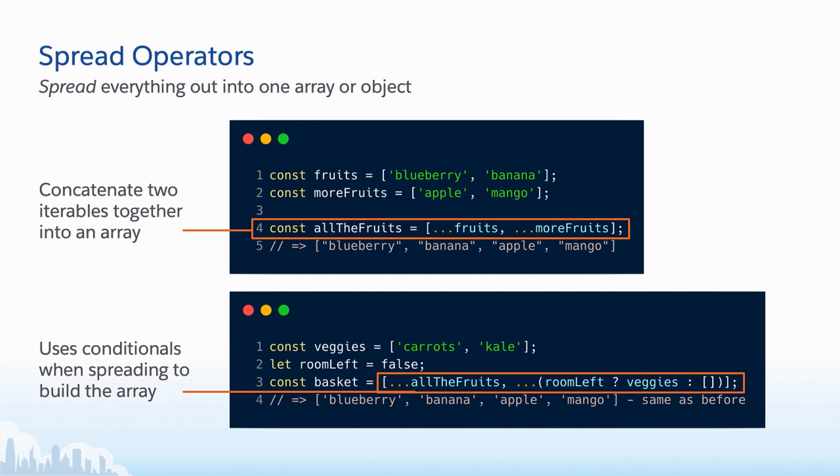One other thing I'd like to point out is that you can use conditionals when spreading to build your array. So hang in with me here as I go through this. Let's say that we have all of the fruits that we collected and we have a basket. So we're taking all the fruits. That's the same array that we had before. We're putting them in the basket. And the second part of our statement, we're seeing the three dots. Inside of the parentheses, we saw this before, this is a ternary operator. So this is our conditional. And we're checking whether there's room left in the basket. Okay? Room left is set to false, which means that we're not going to be able to add our veggies in. Instead, this ternary is going to return an empty array. And when you spread out an empty array, there's nothing in it. There are no elements. And so this ultimately just resolves to our basket has all the fruits in it and nothing else. So line four in the second example matches line five in the first example.